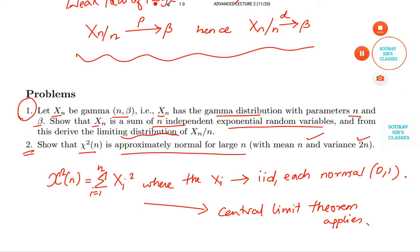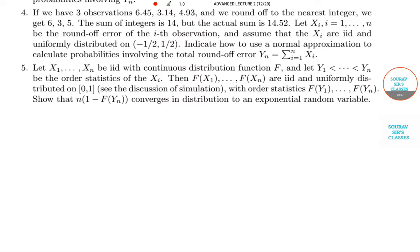Now we will try and answer question number 4. Question number 4 says, if we round off to the nearest integer, we get 635. The sum of the integers is given but the actual sum is this. Let Xi be the round off error of the i-th observation and assume that Xi are iid and uniformly distributed. We need to indicate how to use a normal approximation to calculate probability involving the total round off error.